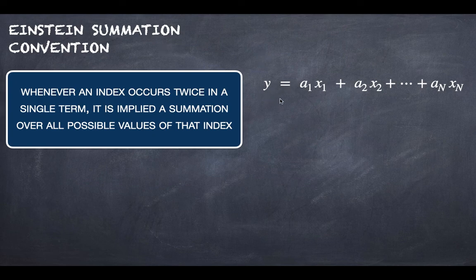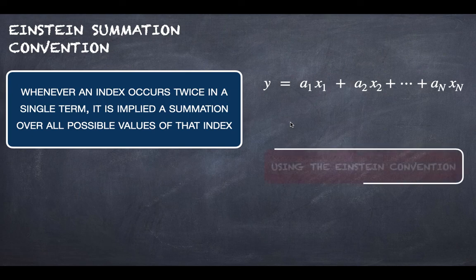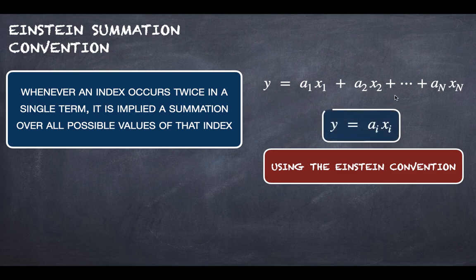So the idea is when you have a function like this one, y equals a function of the variables x₁, x₂, up to xₙ with these a coefficients, you have n coefficients, and you can use the Einstein convention to write this expression.